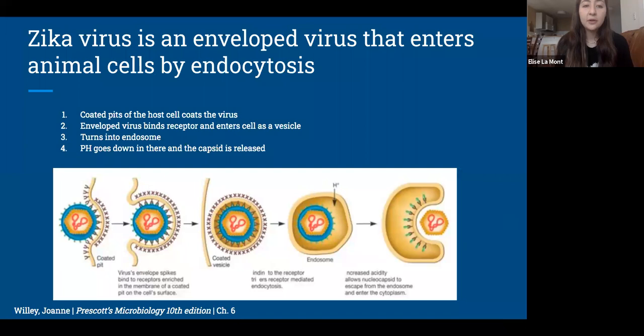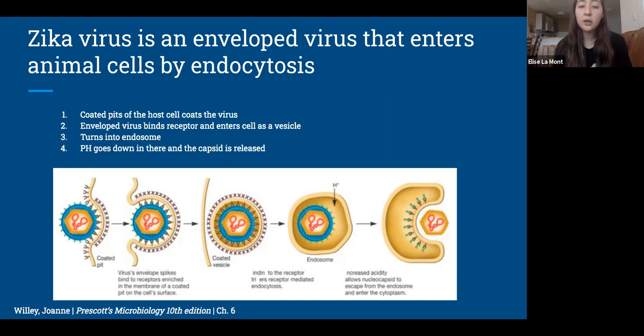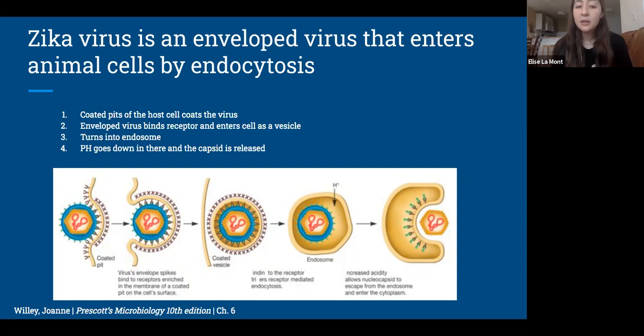Now to cover the route of infection for the Zika virus. The coated pits of the host cell coat the virus via envelope proteins. Viruses are tissue-specific due to specific receptors, so often only certain tissues recognize certain proteins, often those within the envelope of the virus. These envelope proteins allow the virus to bind to the receptor; the enveloped virus binds to the receptor and enters as a vesicle, which then turns into an endosome. During infection, the E proteins on the Zika virus bind to the host cell receptors, the virions are endocytosed, and those E proteins facilitate fusion of the virus with the endosomal membrane. The pH then drops in the endosome, the capsid is released, and this results in release of genomic RNA into the host cell cytoplasm.